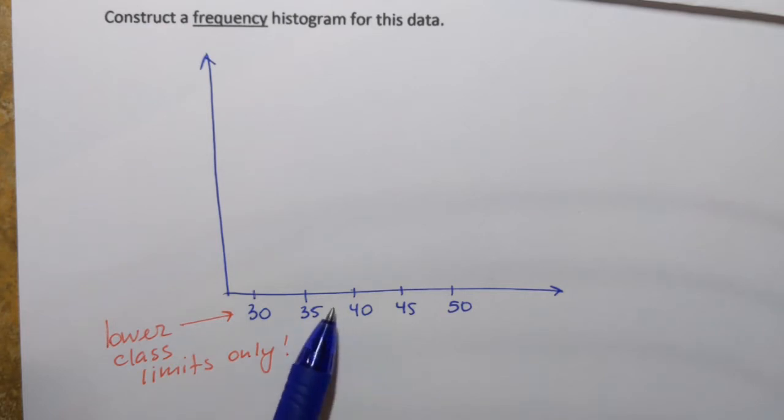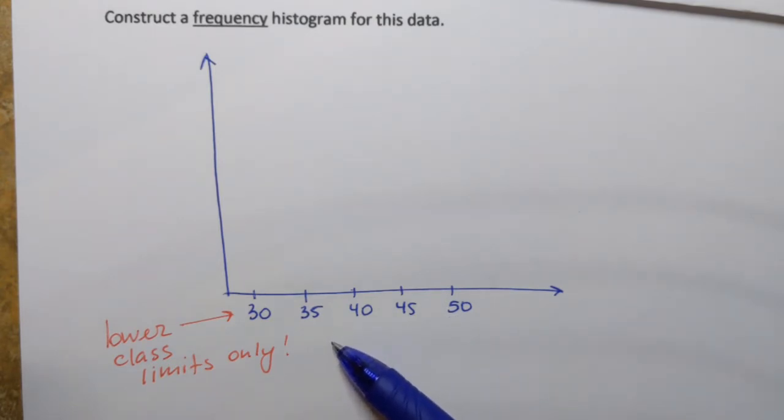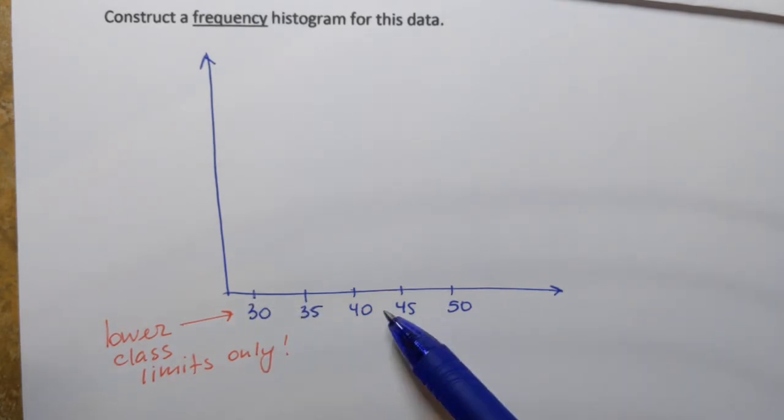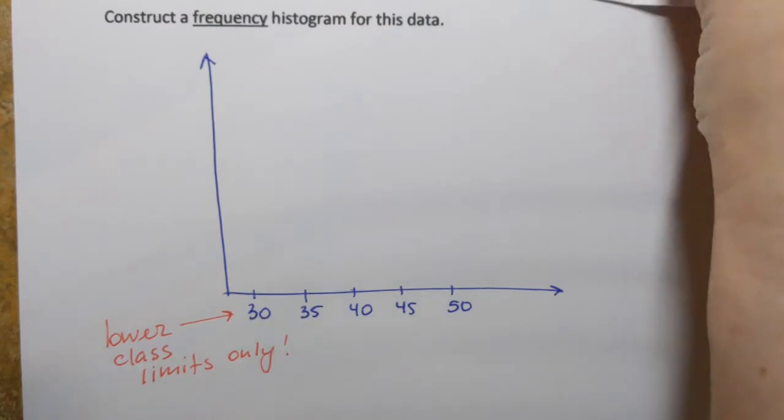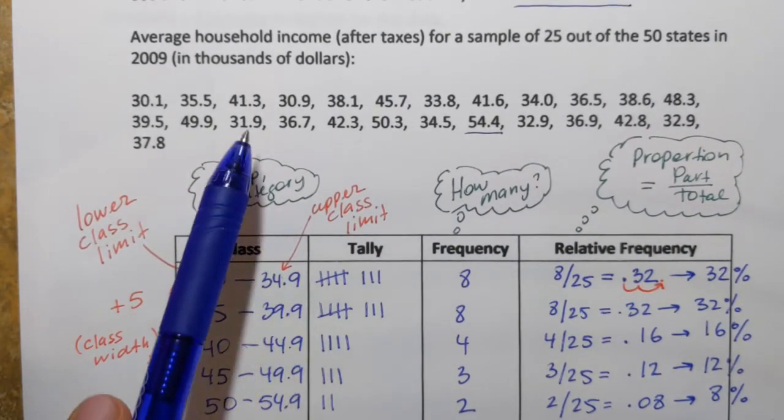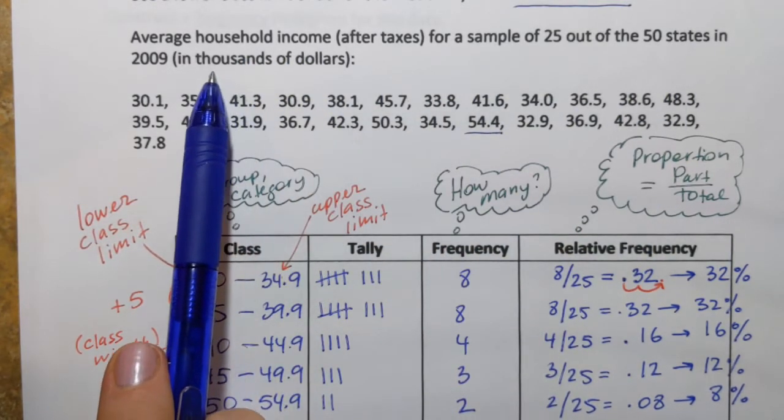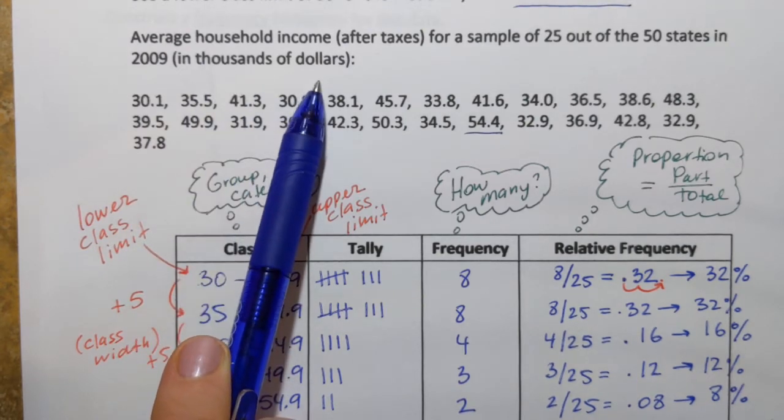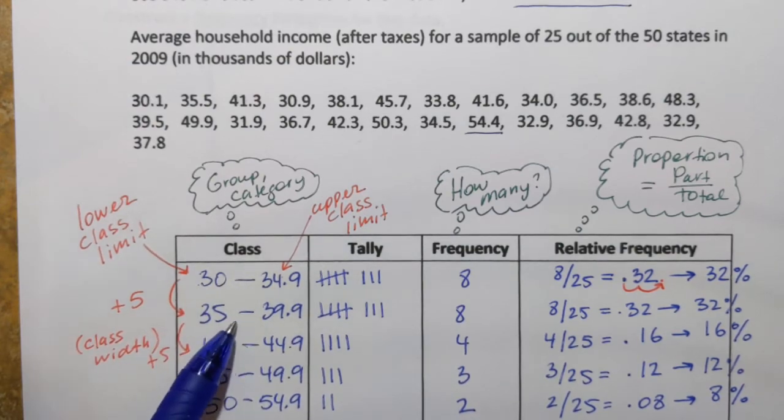Another important thing that we need to remember is that when we label a number line in statistics all those numbers always have certain meaning and that's why we always have to write units. Otherwise someone who looks at this graph may not even understand what it's all about. And for every histogram units will be different. So what are those numbers when we look at the table? Well remember that the data set that we were given represents average household income for different states and those values are in thousands of dollars.